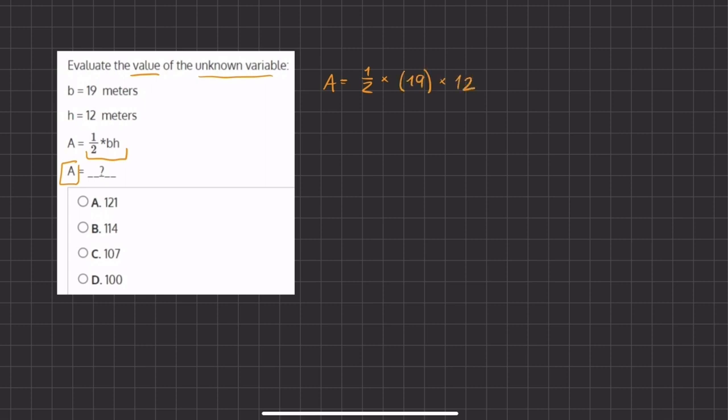Now we have to simplify and solve. We have this half and we can multiply it by an even number so it divides equally. We can switch the numbers around using the commutative property of multiplication. So we have half times 12 times 19.